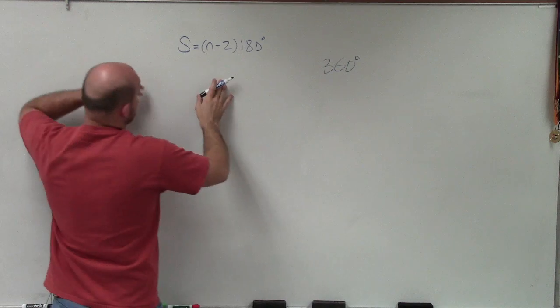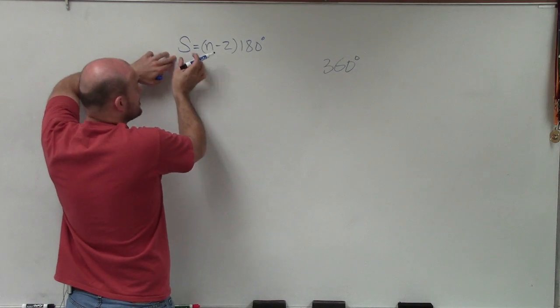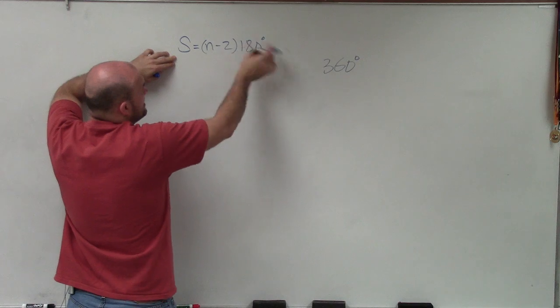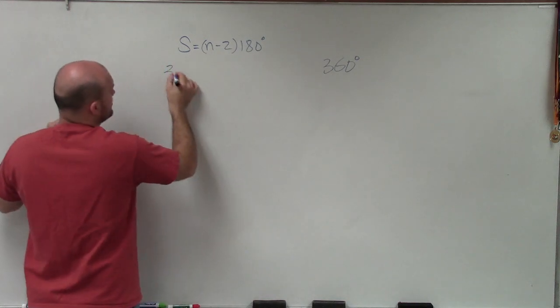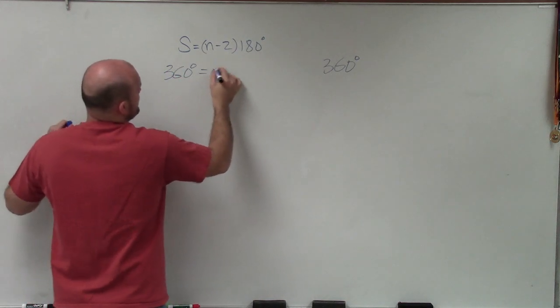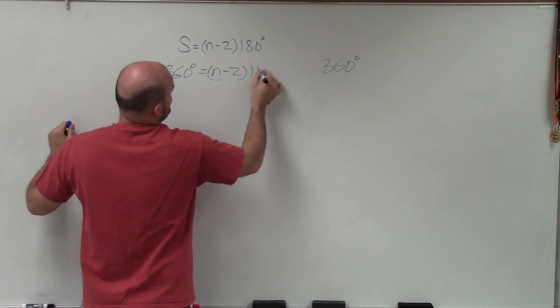So we go to our formula, which says the sum of the interior angles is equal to the number of sides minus 2 times 180. So I know the sum, which is 360 degrees, equals n minus 2 times 180 degrees.